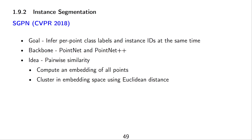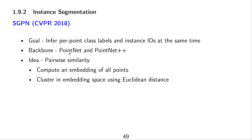The backbone of SGPN is PointNet or PointNet++. One idea presented is pairwise similarity, where all points are mapped into an embedding space via a network. Clustering is then performed in embedding space using Euclidean distances — a concept that remains popular until today. Some results of segmentation are shown.